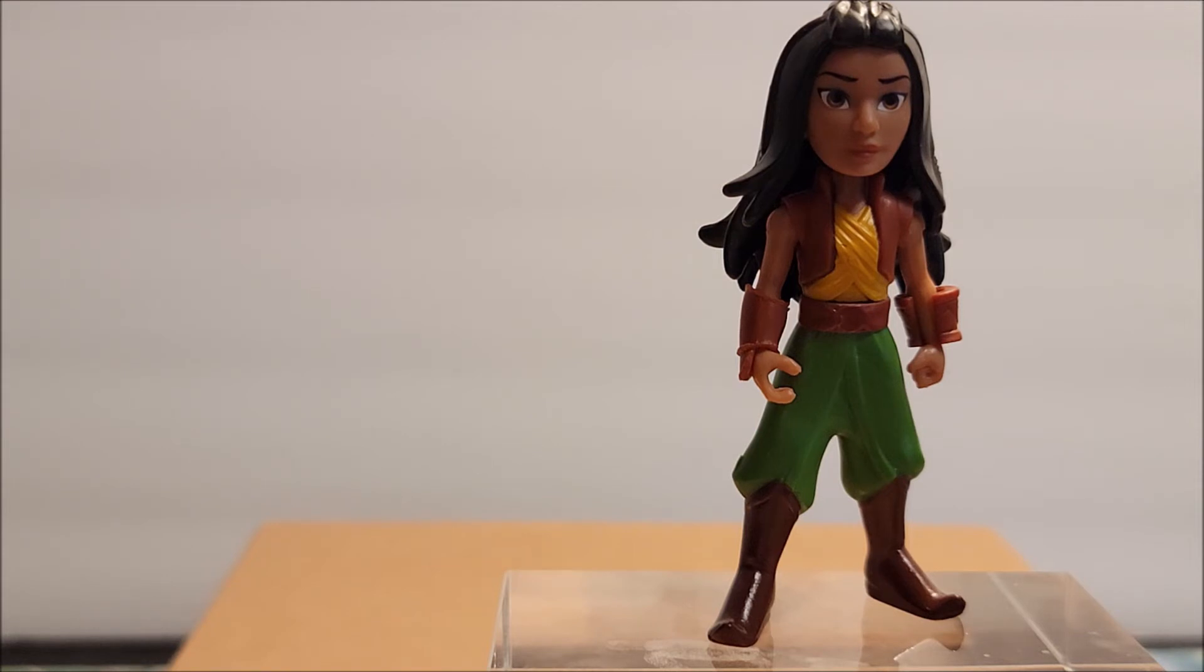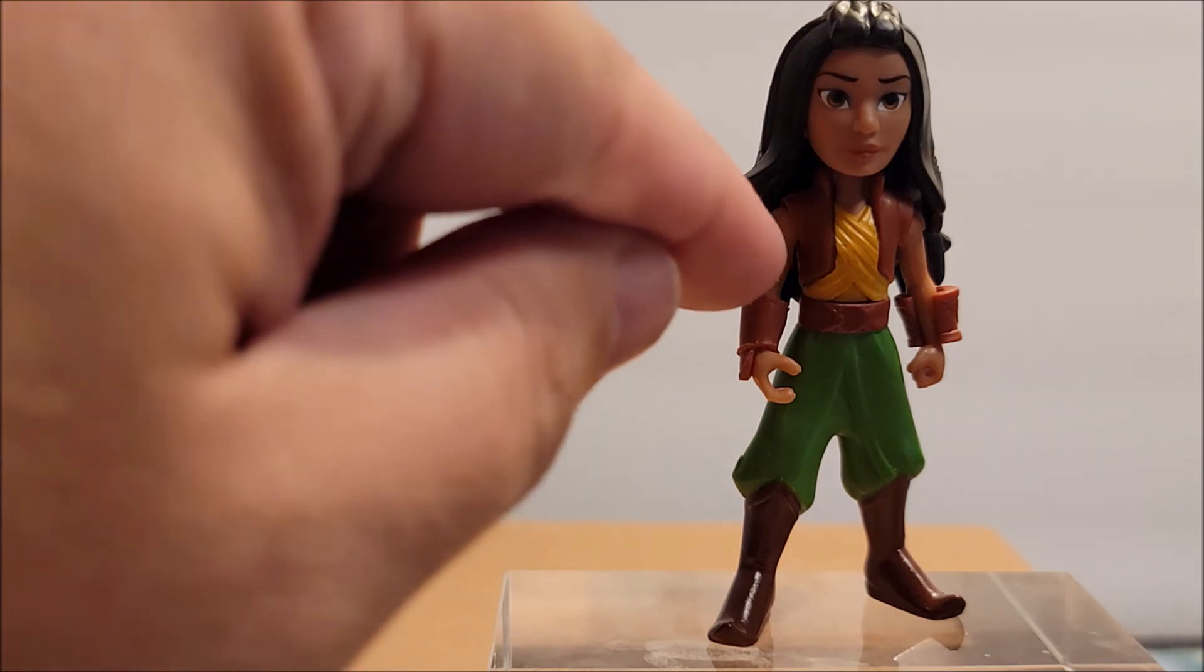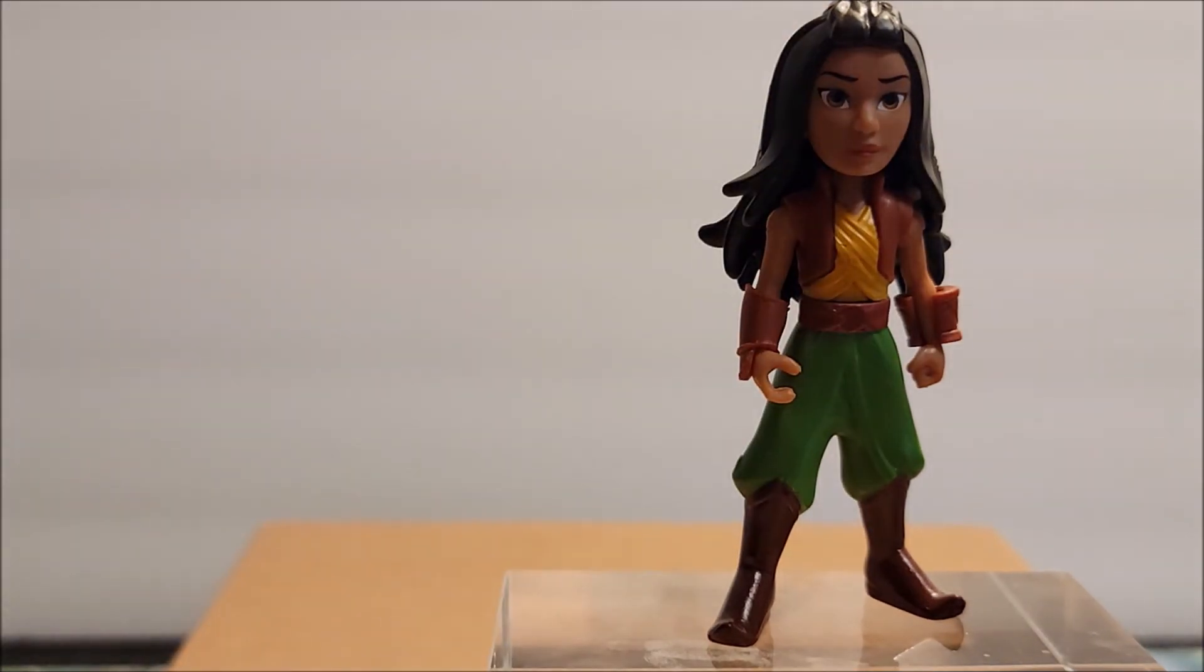And be mindful if you have small children, they do say for ages three and up. But these little pieces do come off. So if your child does like to put things in their mouths, they might put the little bracelet that could come off, you know, in their teeth.